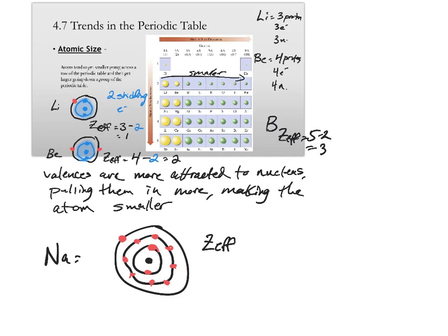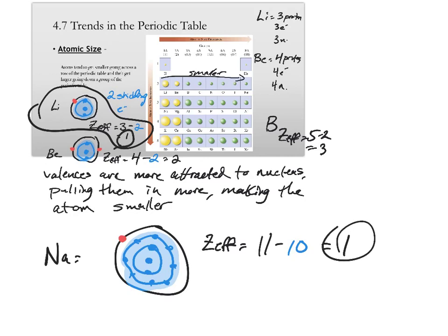So, the Z-effective for this is going to be 11 minus, and we count these all up, there's eight plus two is ten equals one. So, the Z-effective for lithium was also one, since they have the same effective nuclear charge.